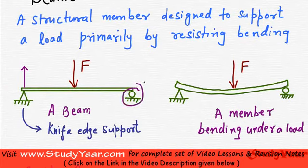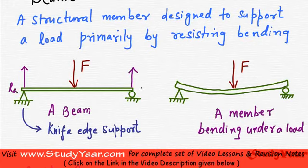So reaction due to a knife edge support is perpendicular to the axis of the beam. And we know that reaction due to a roller is perpendicular to the surface. Over here I have two reactions, Ra and Rb.